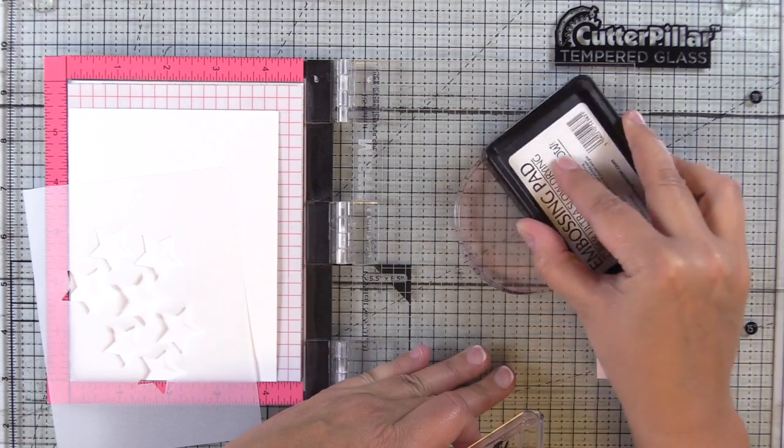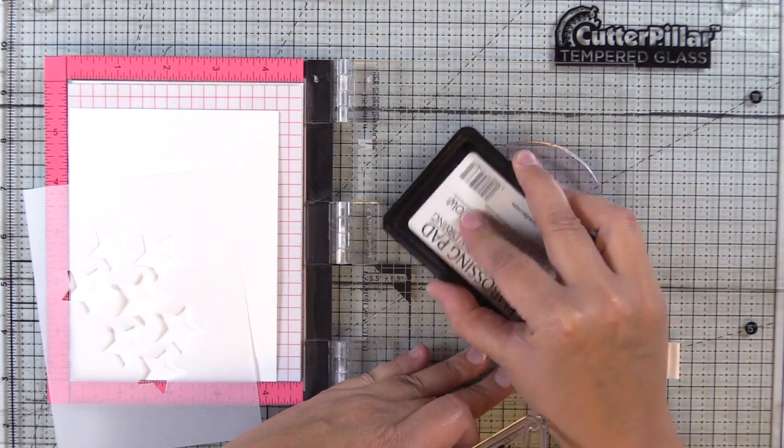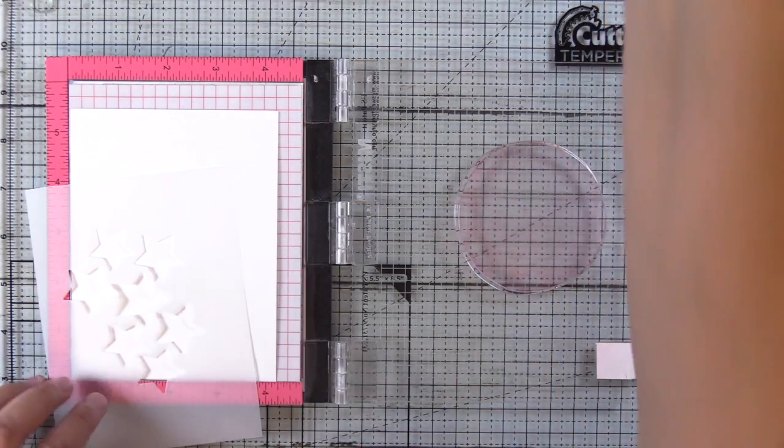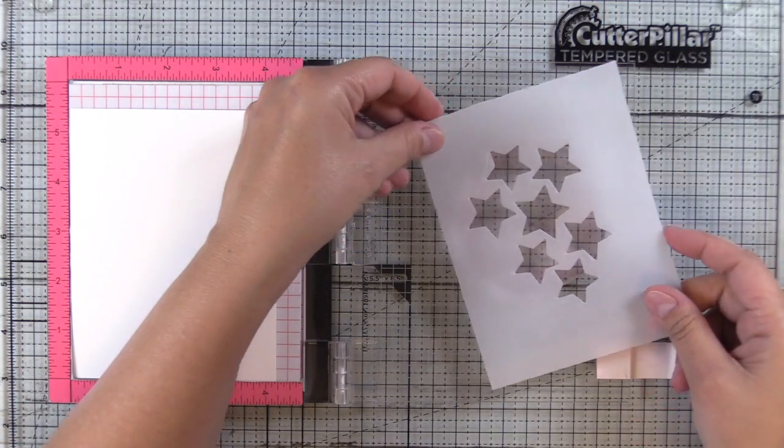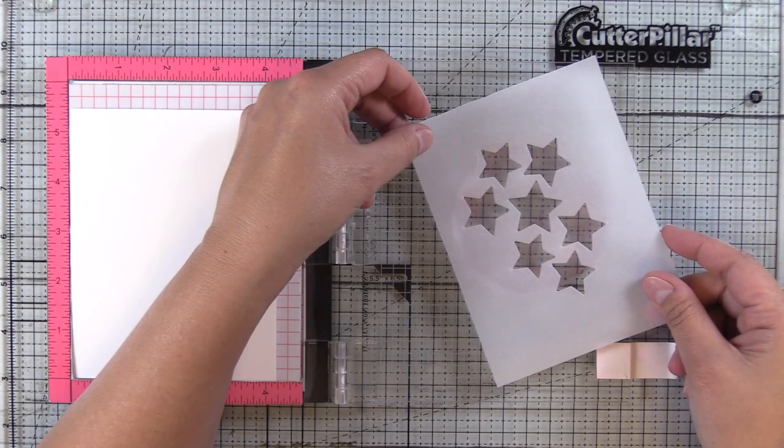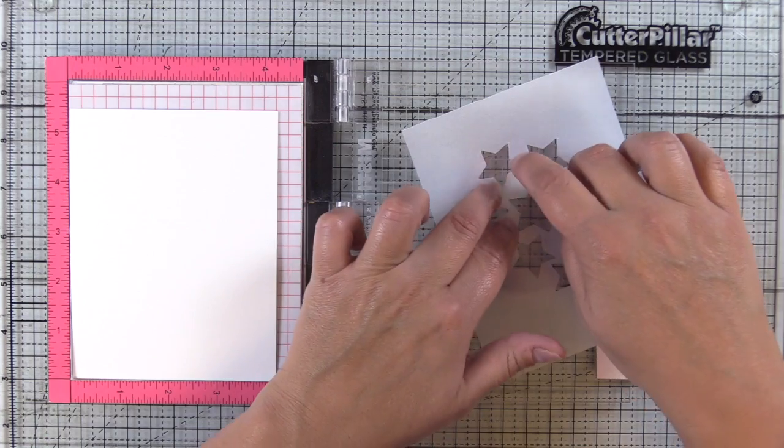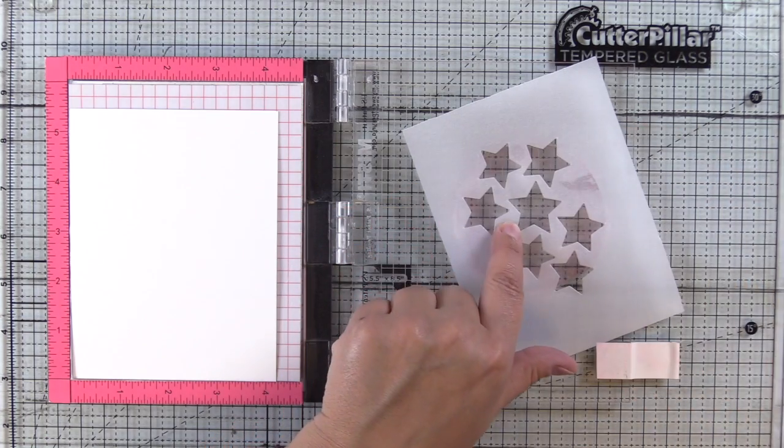This is going to help to keep your die ink moist. This was a larger stamp than I did the first time I shared this technique, and I found that the die ink was drying too quickly. Inking it up with the embossing ink is going to help keep that die ink moist so that you're able to get a clean stamped image.